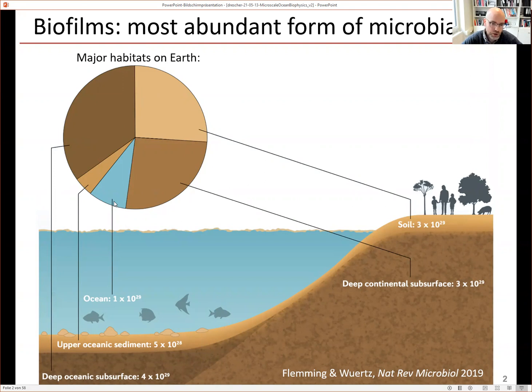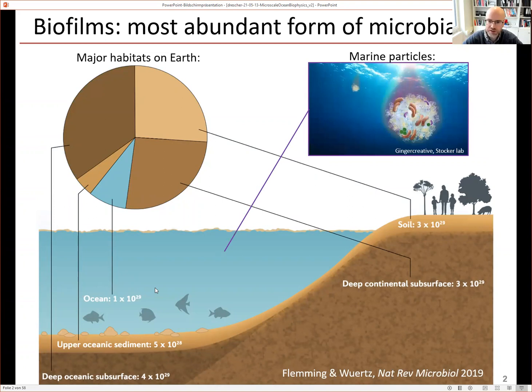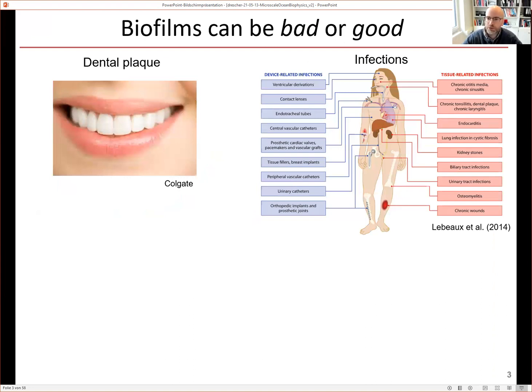With the exception of the ocean, where most bacteria are in planktonic form, even there we have marine snow and microbial communities on animal surfaces enclosed by a matrix — making biofilms highly abundant even if not dominant. Biofilm is absolutely everywhere in the environment, and in addition to environmental abundance, we are also in permanent contact with biofilms, which can be good and bad for humans.